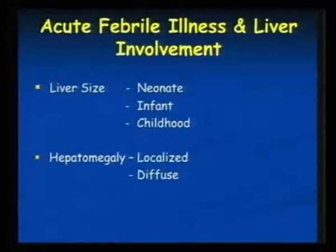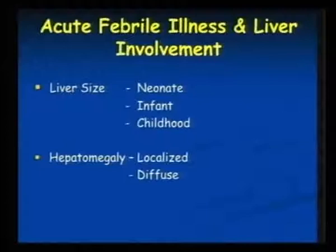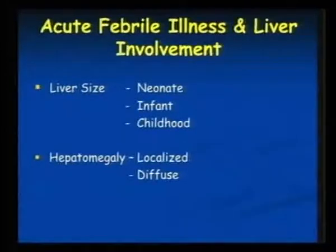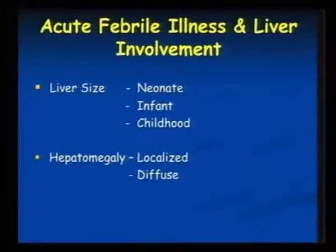Finally, coming to space-occupying lesions. When we palpate a liver, we were discussing the spleen — nearly 5–7% of neonates have a normal palpable spleen, but it is soft. In the pediatric age group up to 12 years, 1–3% can have a normal palpable spleen, but it is soft. Consistency and surface are important before we say it's an abnormal spleen.